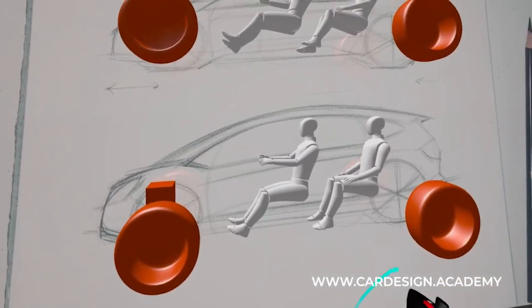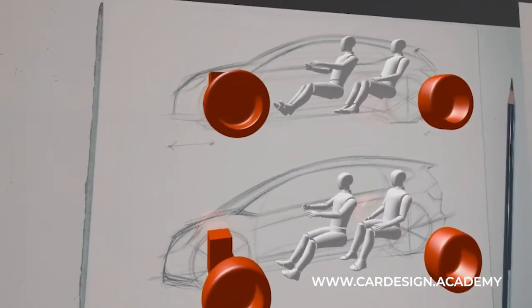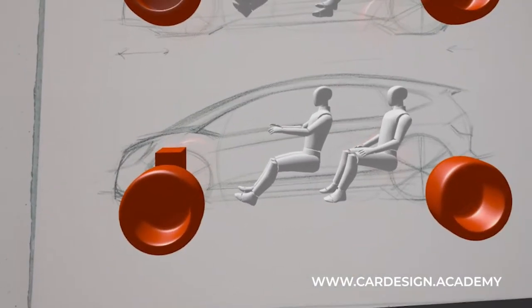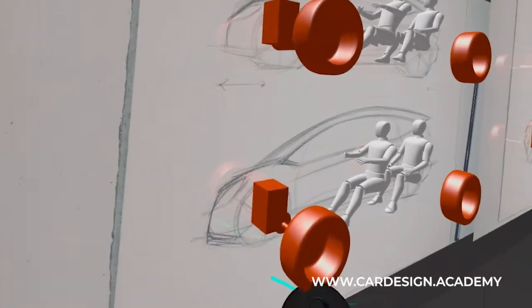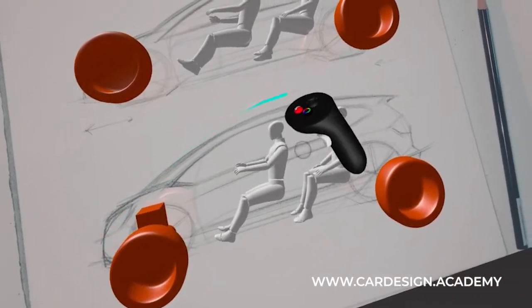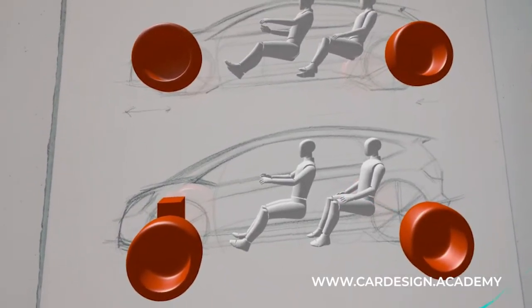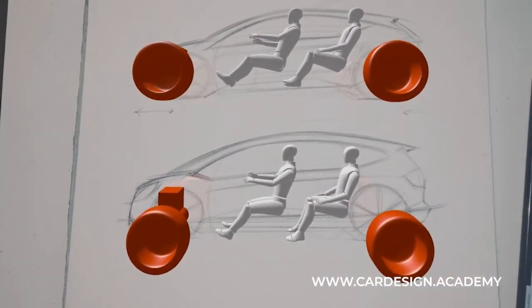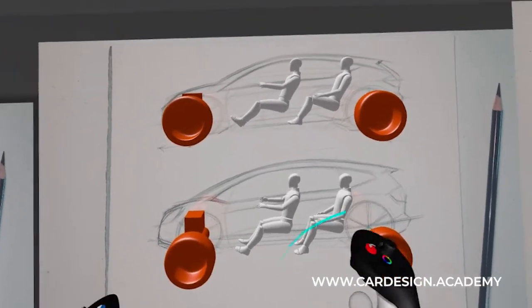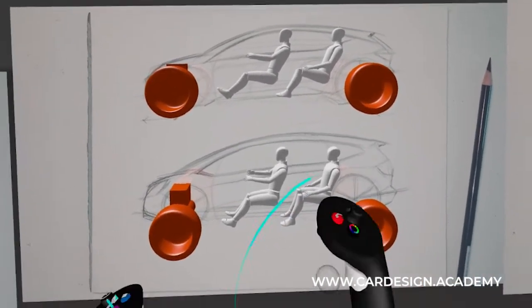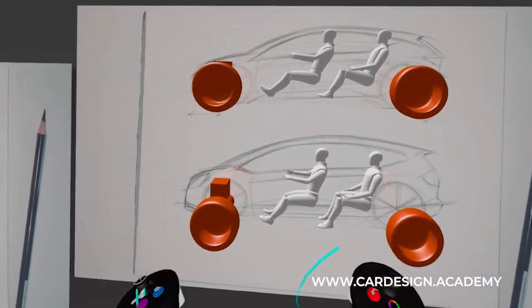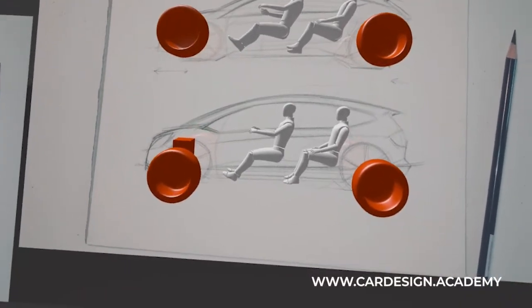Now here's an MPV or minivan that might be built on the same platform as the hatchback with the same powertrain, but the roof is a little bit taller. The occupants sit a little more upright and there's a lot more interior space. And that's just a consideration of the silhouette and the occupants, but has the same mechanical attributes.